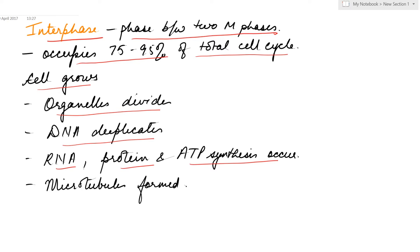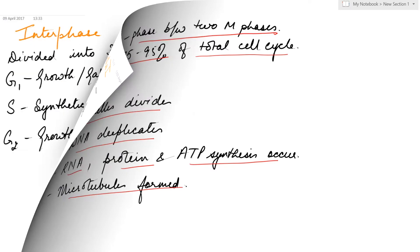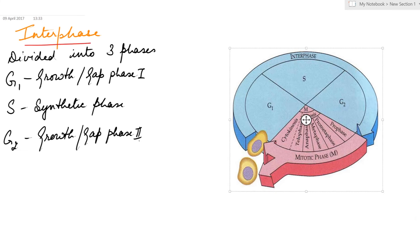Interphase can be divided into three phases: growth or gap phase one (G1), synthetic phase (S), and growth or gap phase two (G2). As a cell is born, it actually enters the G1 stage of the interphase.